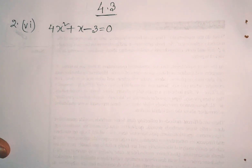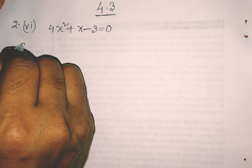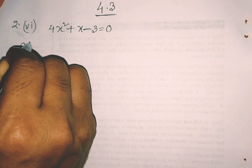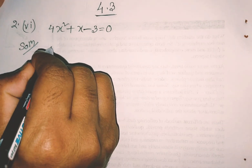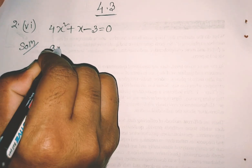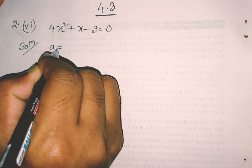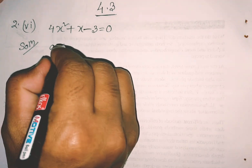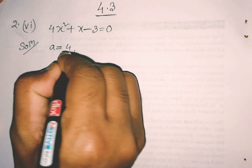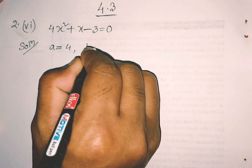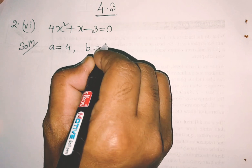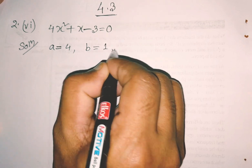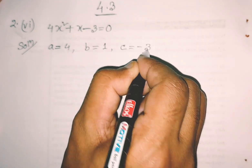So we get our answers. Next question is part Roman 6 — Exercise 4.3, question 2 Roman 6. Here we first identify a, b, c and then put them in the formula. So a is equal to 4, b is equal to 1, x is equal to 1x, c is equal to minus 3.